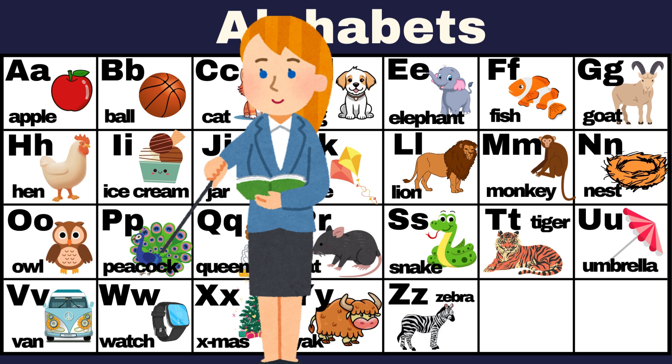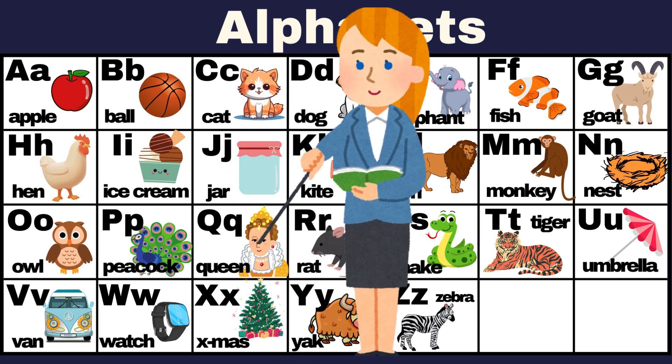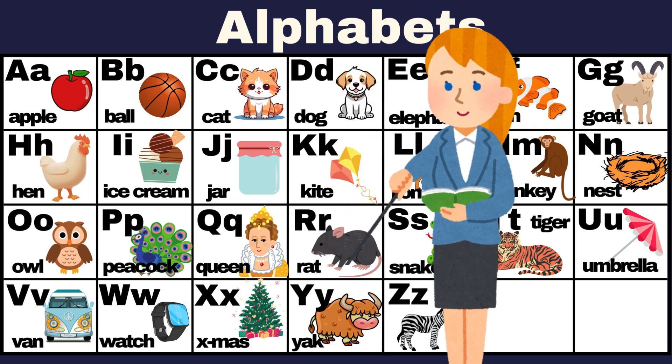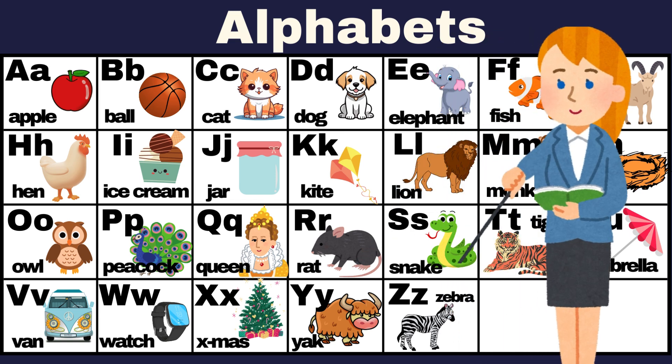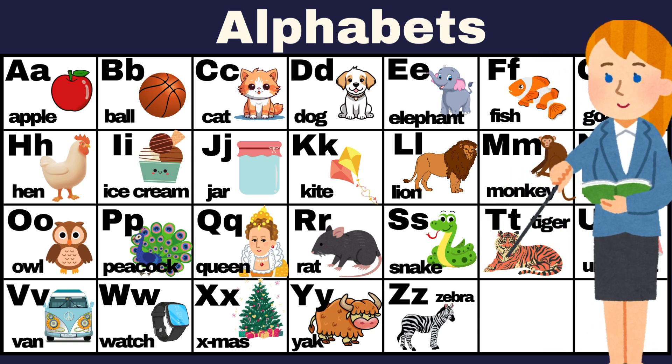P for Peacock. Q for Queen. R for Rat. S for Snake. T for Tiger.